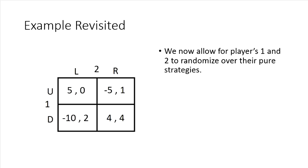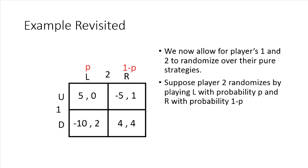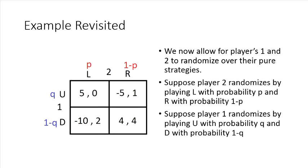So all we're going to do now is allow players one and two to randomize. So just again, imagine like we usually do that two randomizes by assigning probability P to L and one minus P to right. Likewise, player one is going to assign probability Q to the strategy U and probability one minus Q to the strategy D.